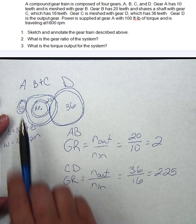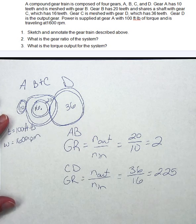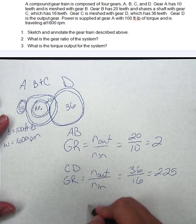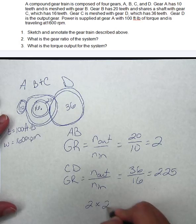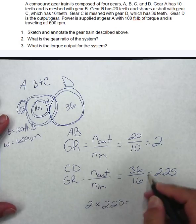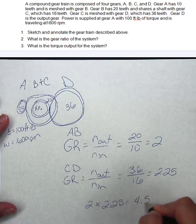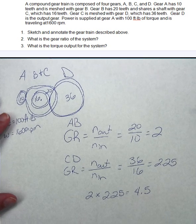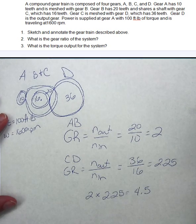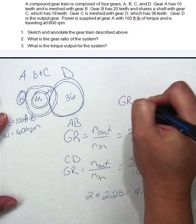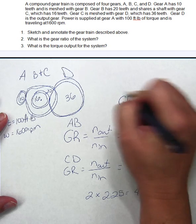So I have the gear ratio of A to B and C to D. So now I just multiply those together. So 2 times 2.25 equals 4.5. So my gear ratio for this whole compound gear system, that gear ratio is equal to 4.5.